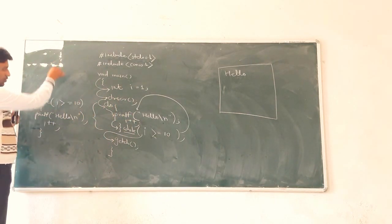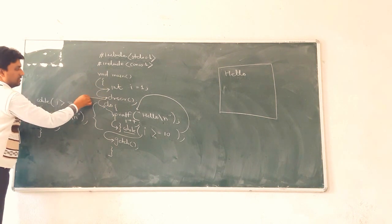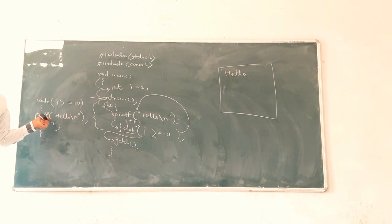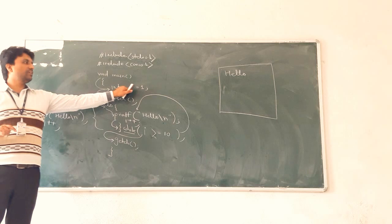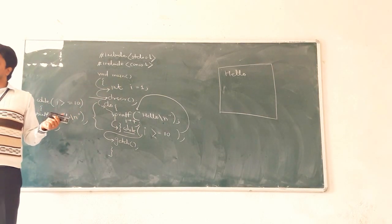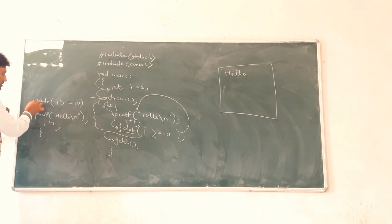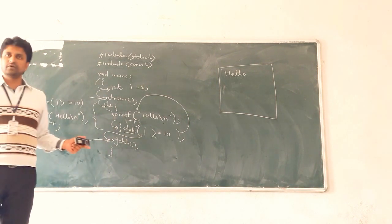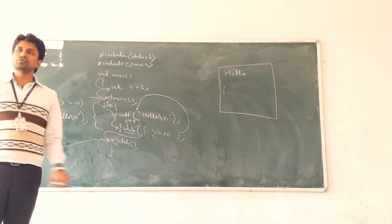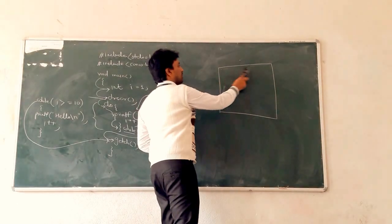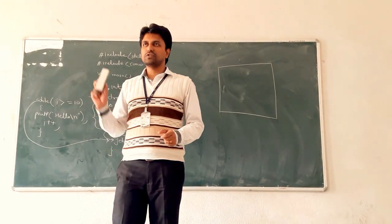So now the code is the same — everything is the same — only replaced do-while with while loop. So now what is the output? Same condition: i greater than or equal to 10, initial value of i is 1. So 1 greater than or equal to 10 — false. Condition false, so the cursor does not enter the body of the while loop, and the runtime cursor goes to getch. So no output on the console.